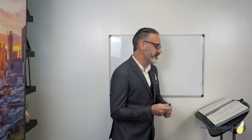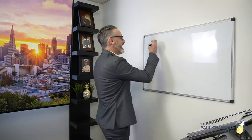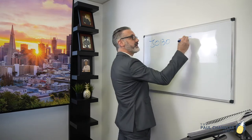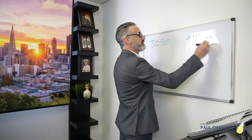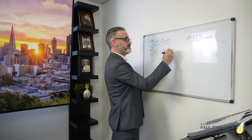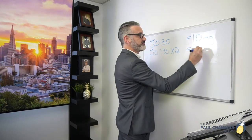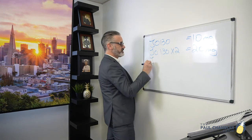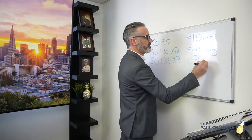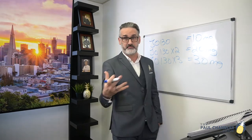Now, notice with code J0130 — one unit of Abciximab equals 10 milligrams. So J0130 times 2 equals 20 milligrams; J0130 times 3 equals 30 milligrams, and I think you get the idea after that.